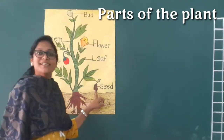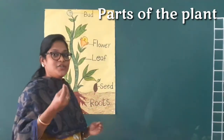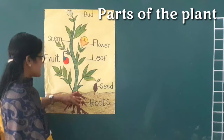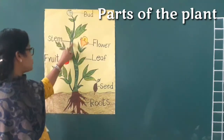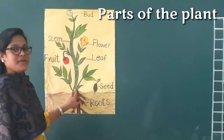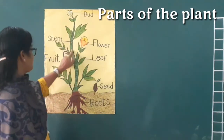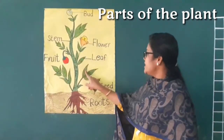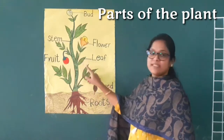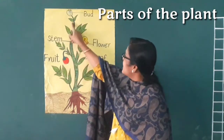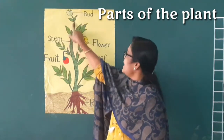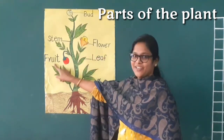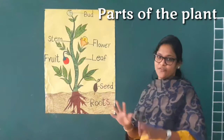A plant comes from a seed, isn't it? So once you sow a seed, first come the roots. Then what is this called? It's called the stem. Next comes the leaf — what are these called? Leaves. And then comes a bud, flower, and fruit. So these are the parts of the plant.